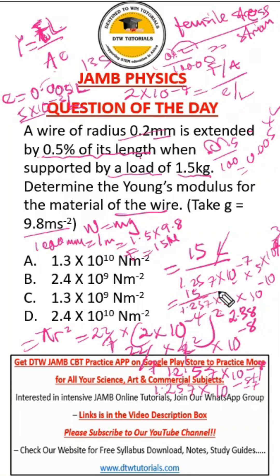So that'll be 15 over 1.257 times 5. Resolving our standard form, that'll be times 10 to the power negative 10. Negative seven plus negative three. Remember this is negative three, our extension. So this is 1 divided by 10 raised to the power minus 10.